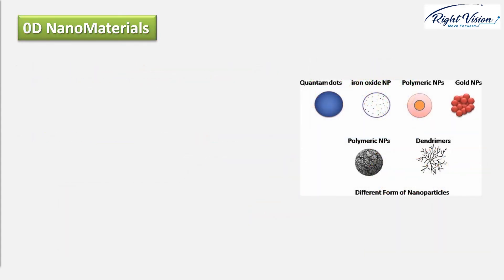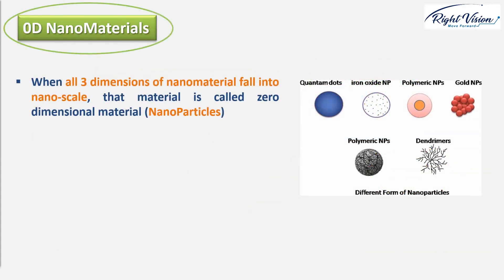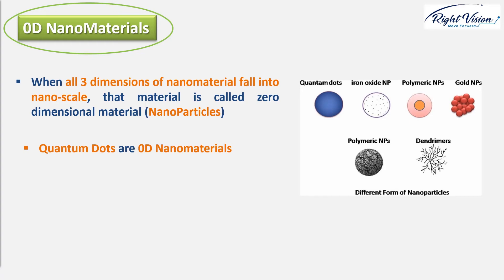When all three dimensions of a nanomaterial fall into the nano-range, such nanomaterials are considered zero-dimensional and are often called nanoparticles. Nanoparticles that we refer to frequently are zero-dimensional nanostructures. When it comes to nanoparticles, we have a variety of types from metal to semiconductor nanoparticles to nanobio types like hemoglobin. One famous example of zero-dimensional materials is quantum dots, which will be discussed in the next lecture.